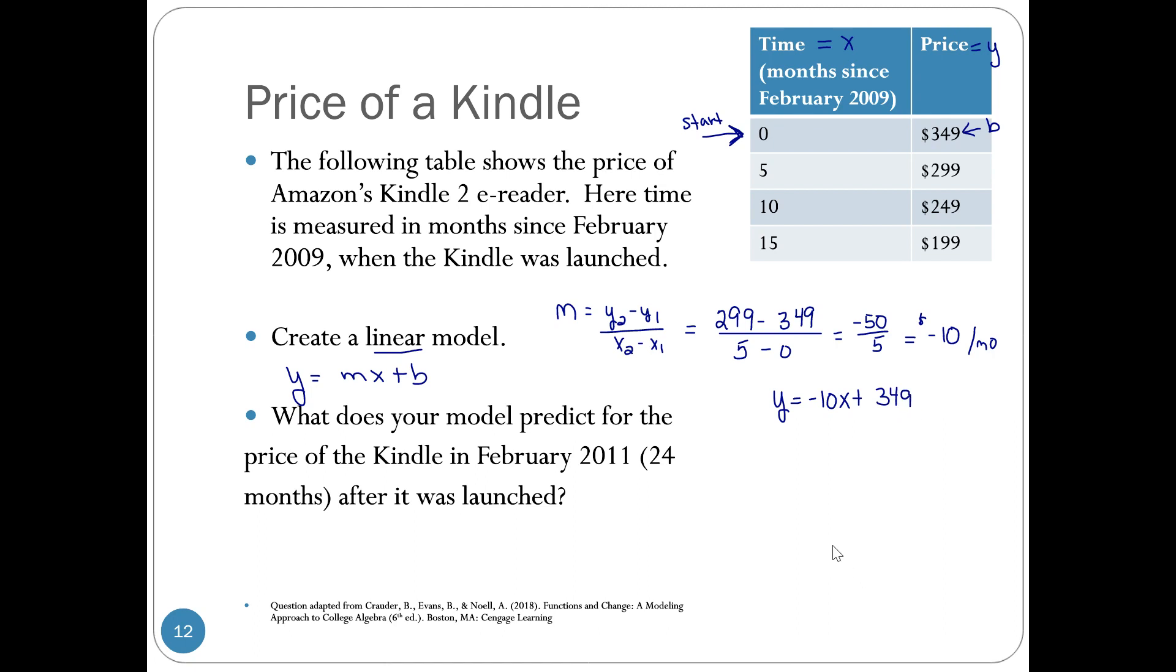Secondly, they asked me to use my equation to make a prediction. What does your model predict for the price in 2011? That is 24 months, and that's really the key because our time is going by months here. So I put y equals negative 10 times 24 plus 349. Do this math on my calculator, and I get y equals 109.